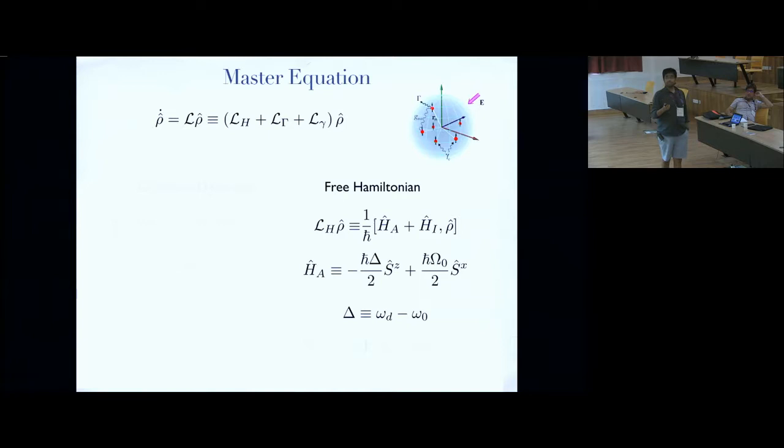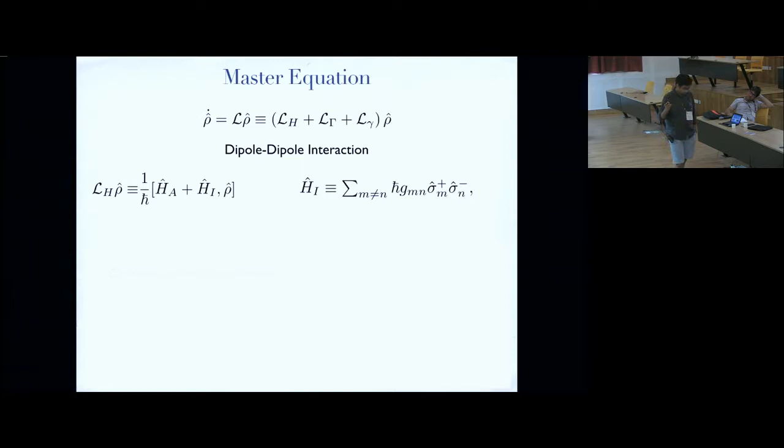So if you look at the Hamiltonian, there are two contributions. Let's first look at the free term H_A. The first part is just the energy of the emitters. Note that now I'm in a rotating frame, where the detuning delta denotes the difference in frequency between the driving and the natural frequency of the two-level atoms. The second term here represents the driving, and where omega naught is basically the Rabi frequency of the drive. We assume that this entire electric field is uniform over the volume of the emitters. As a result, we get a driving that is on the collective spin and not on the individual ones. There is no inhomogeneous driving. Finally, let's look at the interaction part.